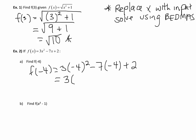So our next step here, negative 4 squared is 16. Negative 7 times negative 4 is positive 28 plus 2. 3 times 16 is 48 plus 28 plus 2. That gives us 78.